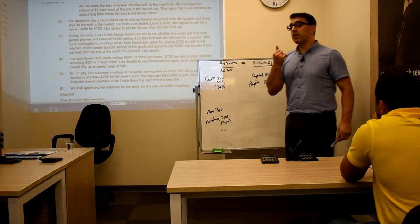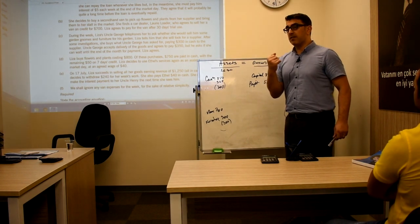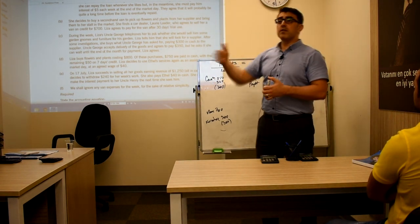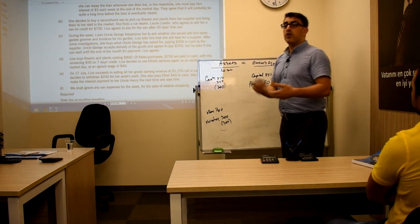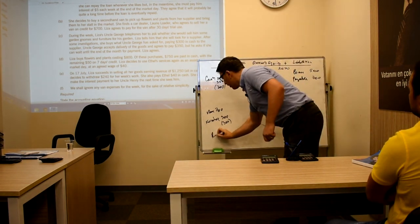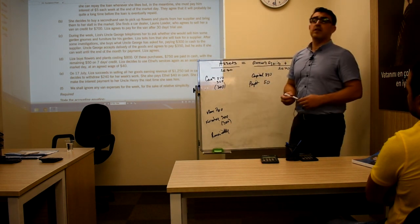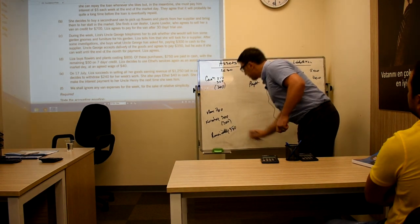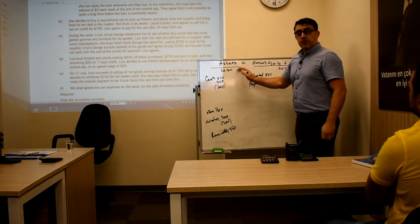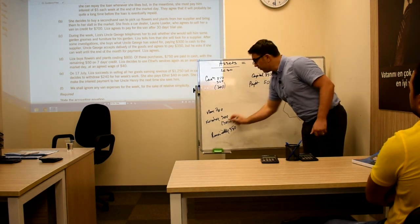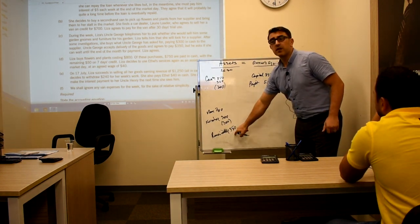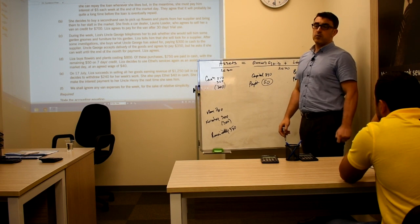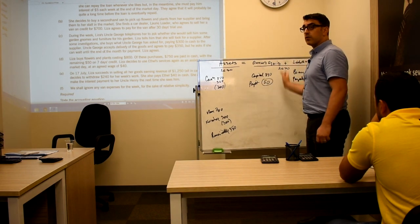We decreased cash, increased furniture, then decreased furniture, and made a $50 profit on this transaction. Since we sold on credit, we'll receive the money at the end of the month. We now have a receivable account — this is a new account. The receivable amount is $350. The left side of the accounting equation increased by $50 because furniture decreased by $300 and receivables increased by $350. The right side also increased by $50 as a result of earned profit. Left side equals right side.